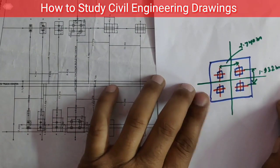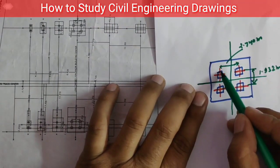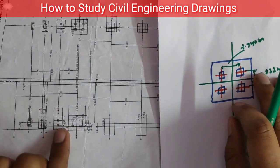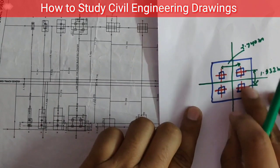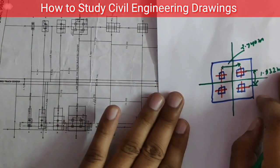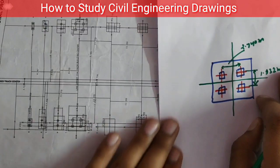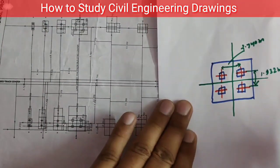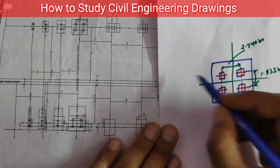From this center of the column to the center of the column, 2.740 meters, and from this to this is 1.932 meters. When we are making another footing like here...